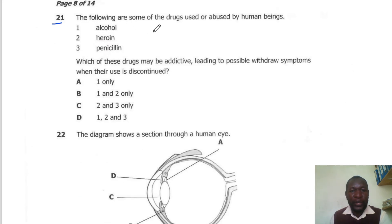Question 21. The following are some of the drugs used or abused by humans. Which of these drugs may be addictive and lead to withdrawal symptoms when use is discontinued? The drugs which are addictive are alcohol as well as heroin. So the correct answer here is B.